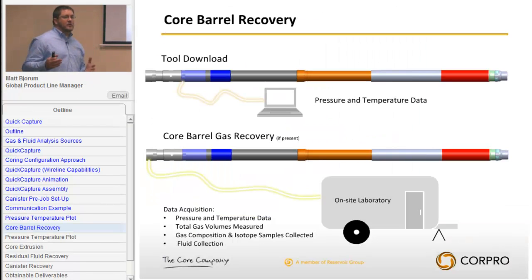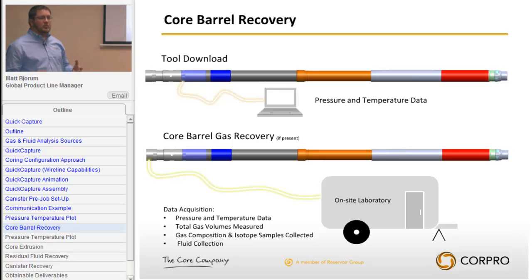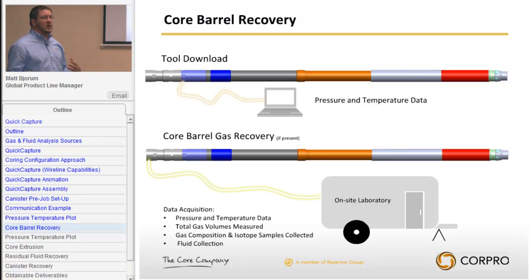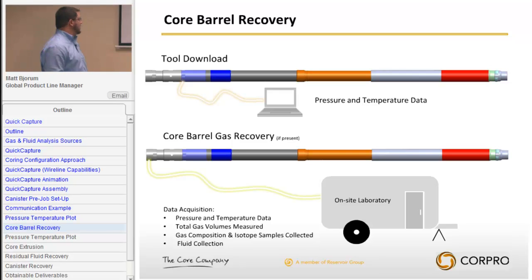Where Doug left off, we have the barrel on surface. The first thing we do is download the pressure and temperatures to get an idea of how the core behaved as it tripped out of the hole. We lay the barrel down, hook into the gauges, download the pressure and temperatures, monitor gas and liquid evolution, and monitor the behavior of the barrel — because the barrel is still a live system. If it's extremely gassy and still building pressure, we want to ensure that when we transfer it to the laboratory, it's done safely.